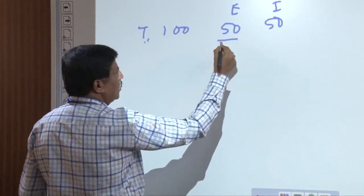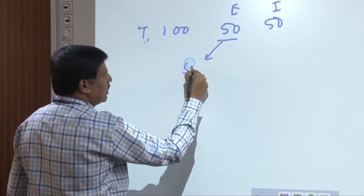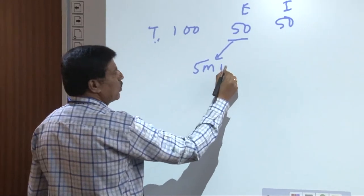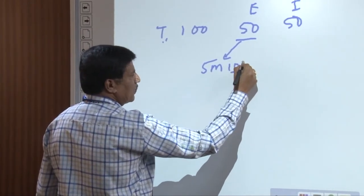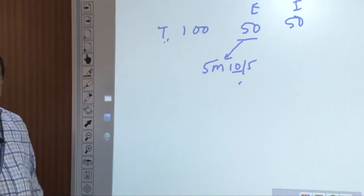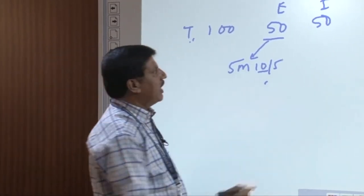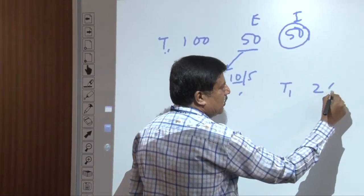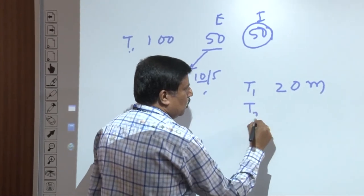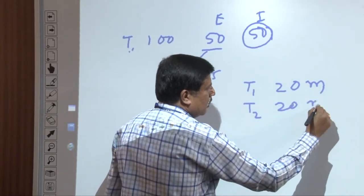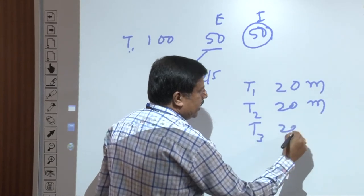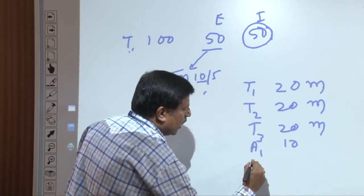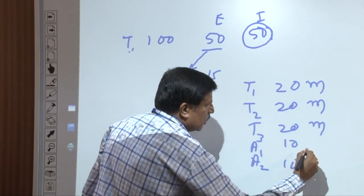For the 2021 scheme, theory subjects carry 100 marks total: 50 marks external and 50 marks internal. For the external exam, 5 modules are taught and 10 questions are set — you answer any 5. Your total score is reduced proportionally to 50 marks. For the 50-mark internal, we conduct Test 1 for 20 marks, Test 2 for 20 marks, Test 3 for 20 marks, Assignment 1 for 10 marks, and Assignment 2 for 10 marks.